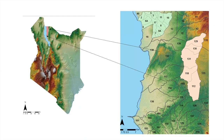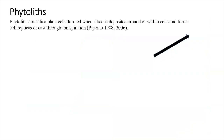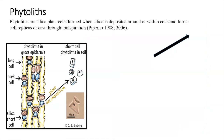This study was in Lake Turkana at two sites: Ilerate and Karari. Samples were collected in different places, and this map shows all the places I collected samples. For this study, I used phytoliths. Phytoliths are silica cells formed when silica is deposited around or within cells, creating cell replicas or casts through transpiration. This is how phytoliths form in a leaf or in bark.